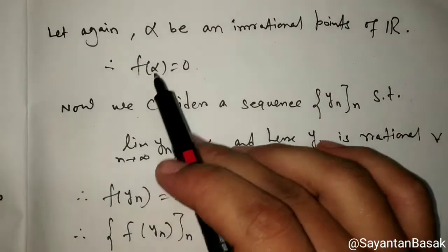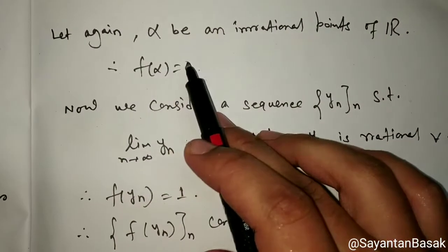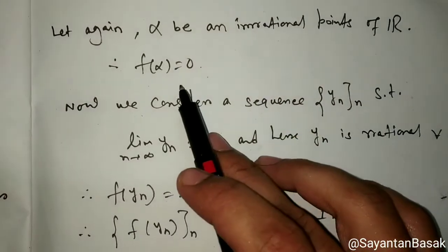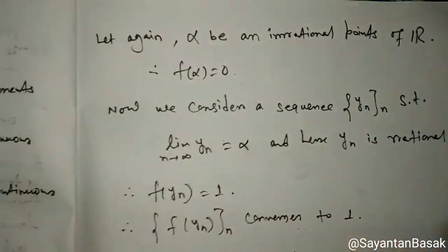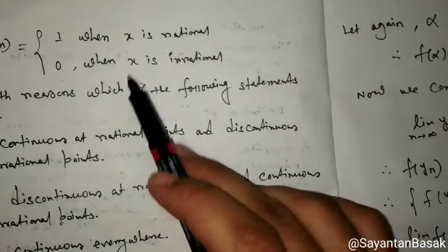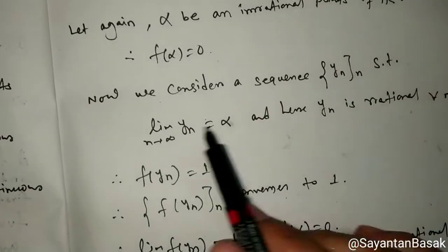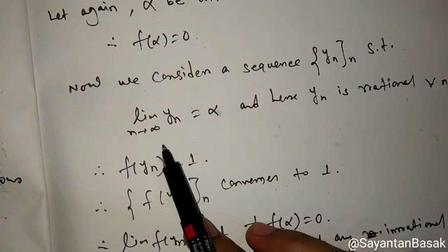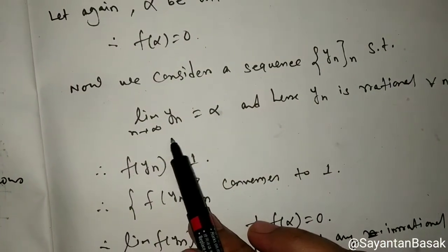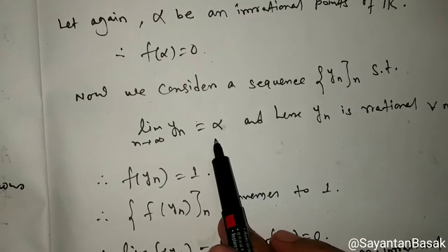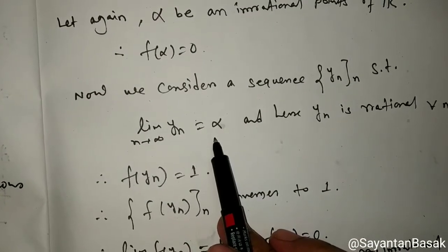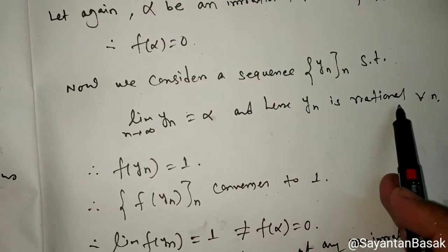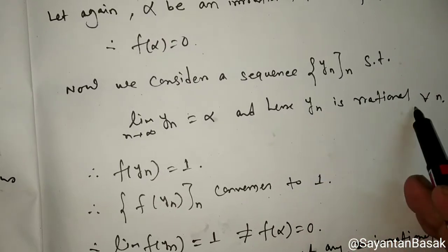Second case: let alpha be an irrational point of R. So f(alpha) equals 0 by the given condition. Now we consider the sequence y_n such that the limit as n tends to infinity of y_n equals alpha, where y_n is rational for all n.